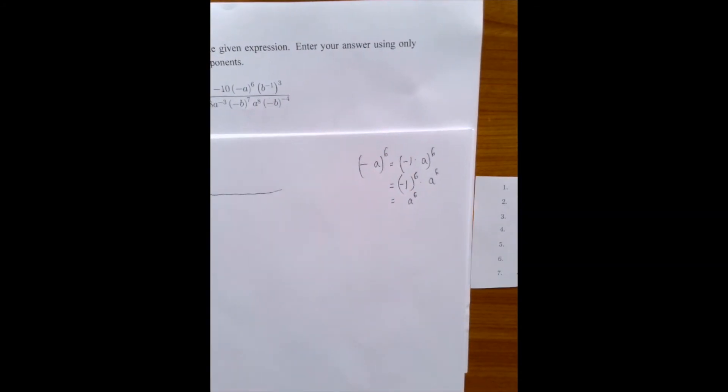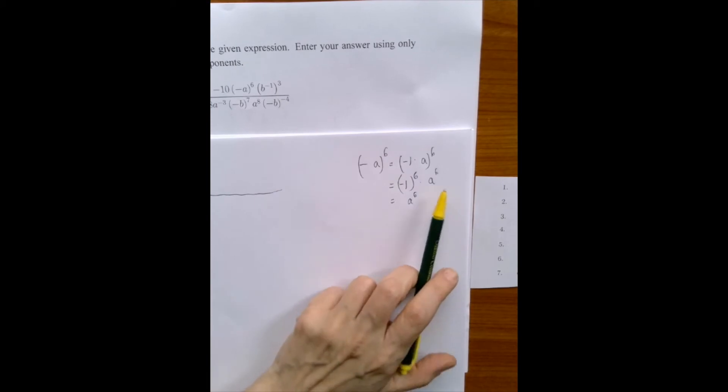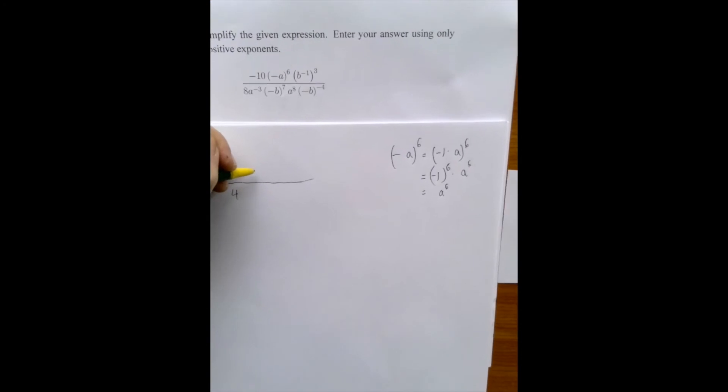Notice that if this exponent were odd, then the result would have been minus a to the 5 or 7 or whatever that odd exponent was. So we can simplify this expression as a to the 6th.